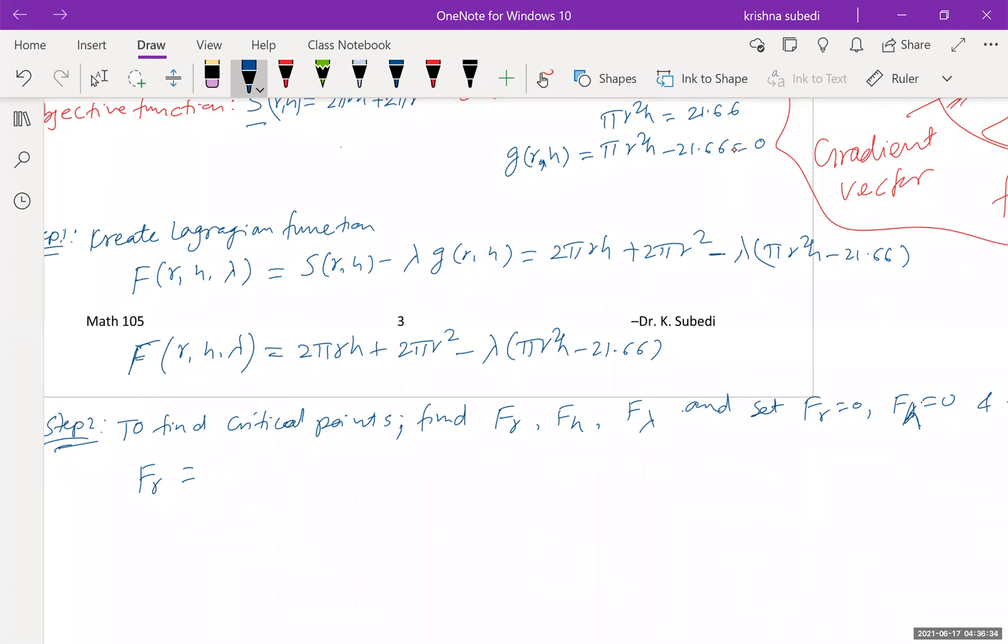So let us find F sub r. F sub r will be 2 pi h plus 4 pi r minus 2 pi r h lambda. F sub r means we consider r as a variable, and then h and lambda as a constant. So from the first one, I'll get 2 pi h. From here, 4 pi r. And from there, 2 pi r h lambda.